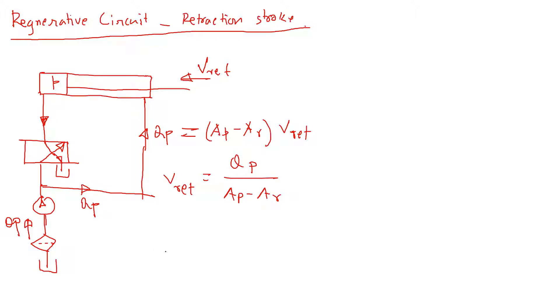Now similarly, we can calculate the load capacity. Since the return line goes to the reservoir, there is no back pressure. The only pressure we have is P, so basically you can think of zero pressure here.